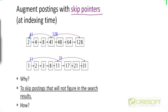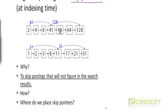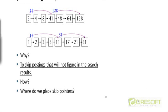For example, this skip pointer points from 2 to 41, and this skip pointer points from 1 to 11. We will follow these skip pointers when we are sure that the intermediate results are not going to be useful for the answer.